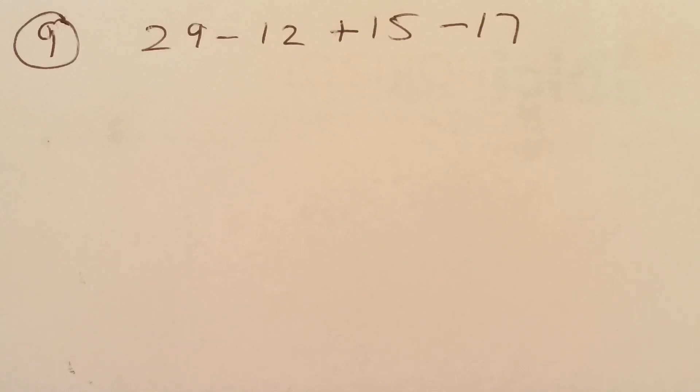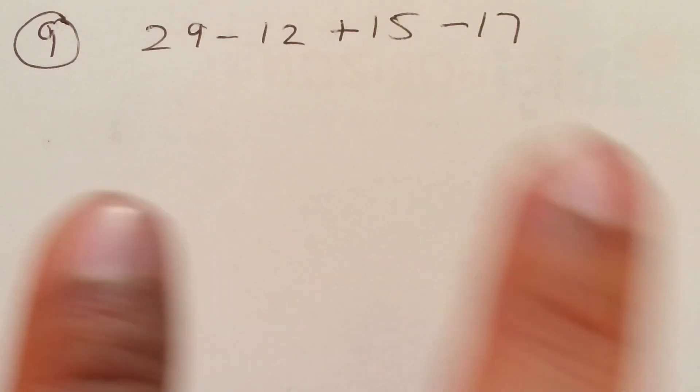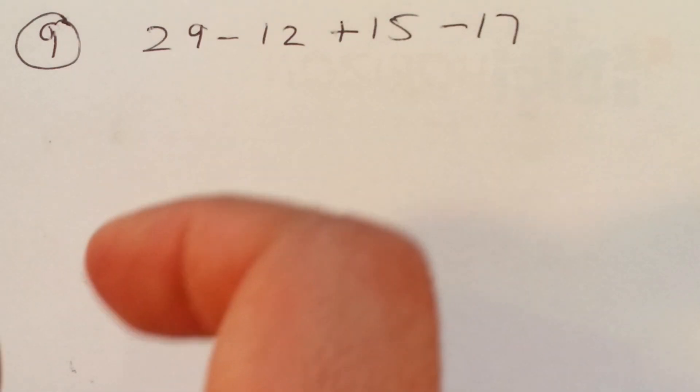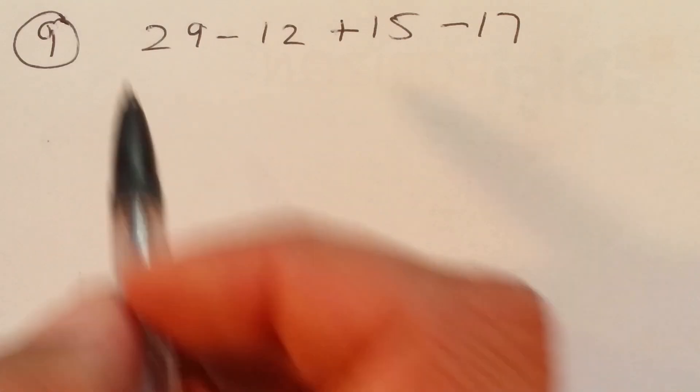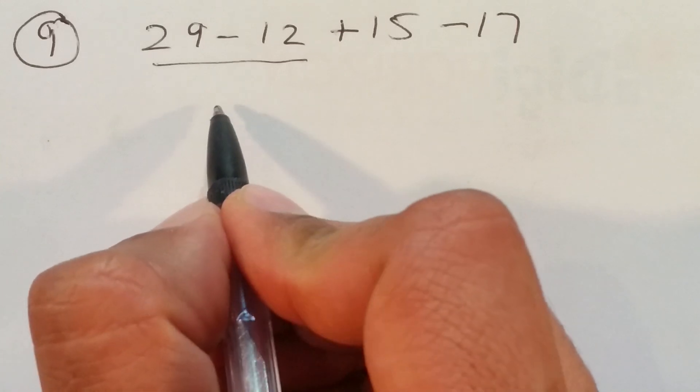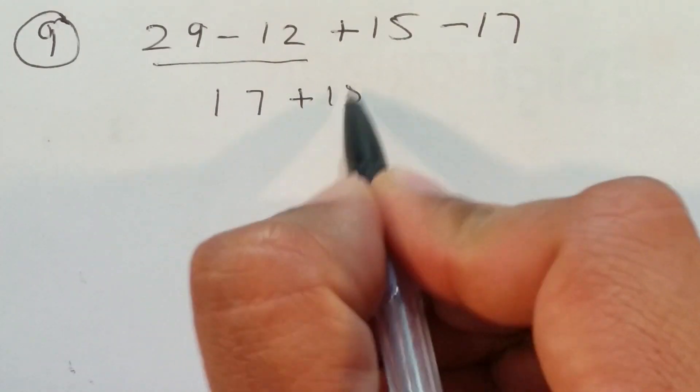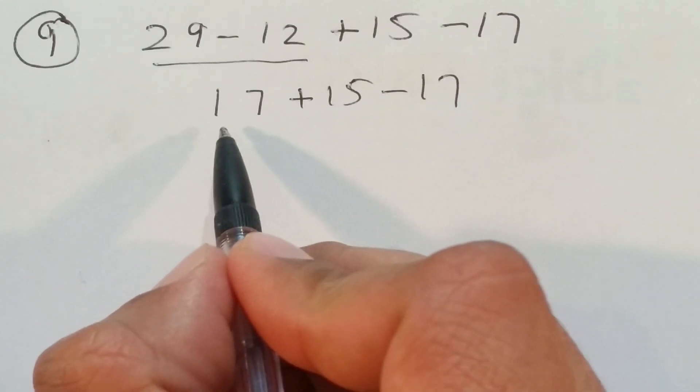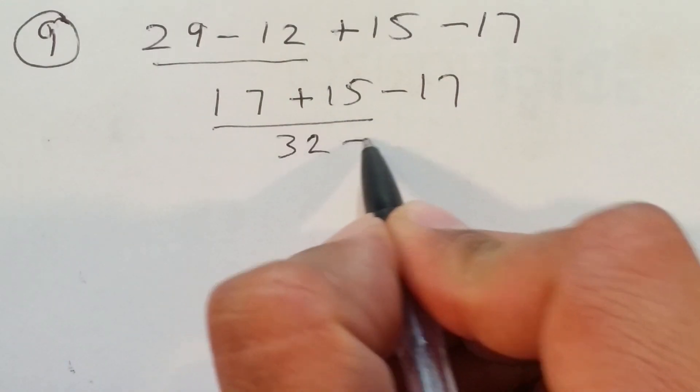When you reach this stage, it's good to follow the path. Flow. Follow the flow, basically. Go that way. Instead of people get confused when you're taking plus, plus, minus, minus. They get confused with that. So, it's easier to follow the flow. Which is 29 take away 12, which is 17. Plus 15, minus 17. 17 plus 15, which is 32, minus 17.